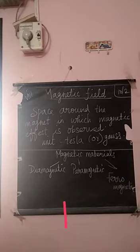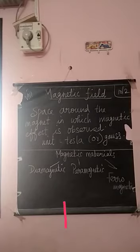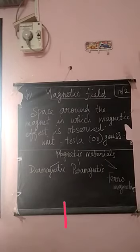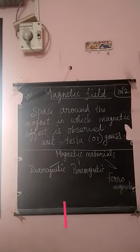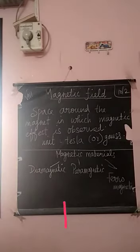If a diamagnetic material is suspended in a uniform magnetic field, that diamagnetic material aligns itself perpendicular to the direction of the magnetic field. That is the first characteristic.